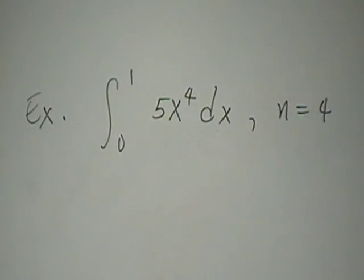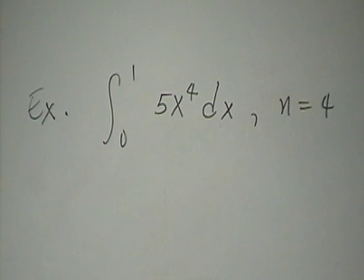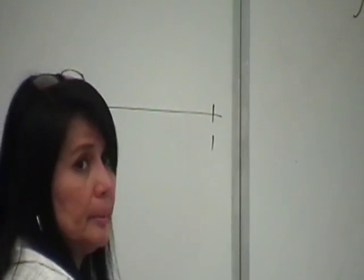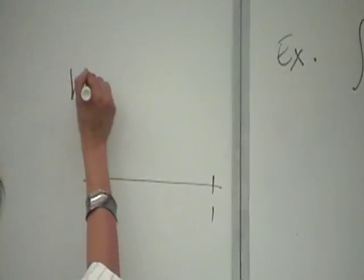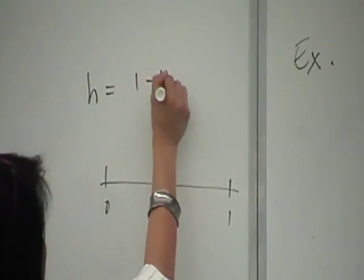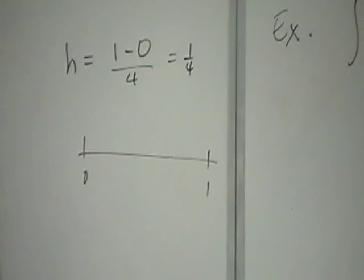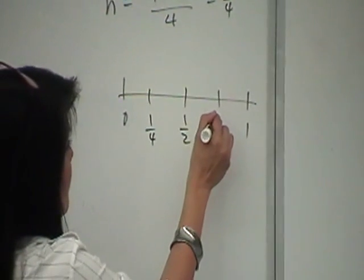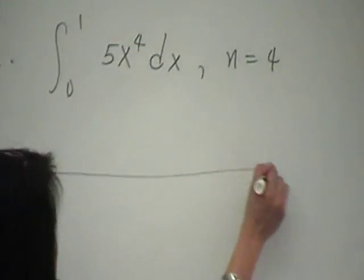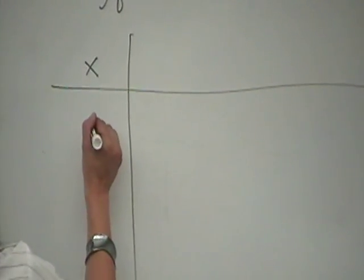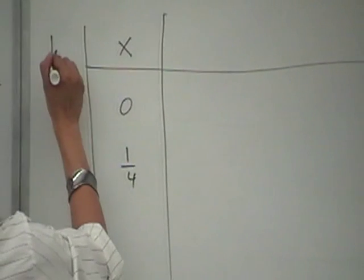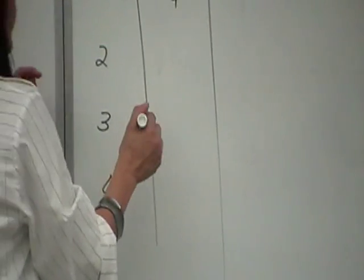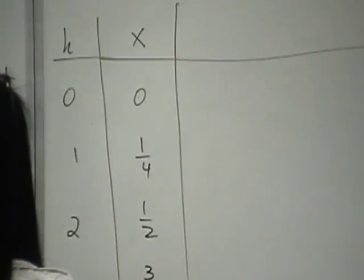For an example, consider the interval 0 to 1 divided into n = 4 subintervals. You don't need to graph the function. We have h = (1 − 0)/4 = 1/4. The x-values are 0, 1/4, 1/2, 3/4, and 1.